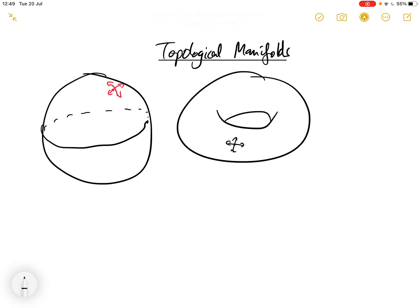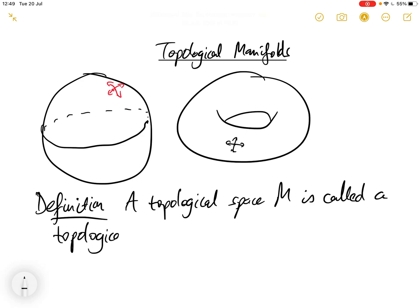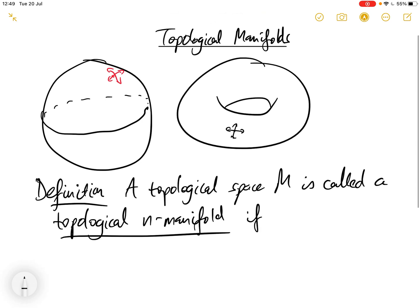And this is true for any smooth surface. So we now want to generalize this. To give the formal definition: a topological space M is called a topological manifold of dimension n, or a topological n-manifold, if the following conditions hold.